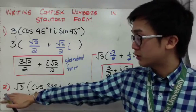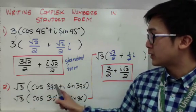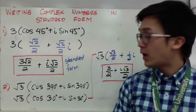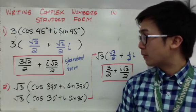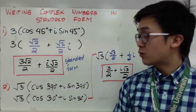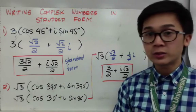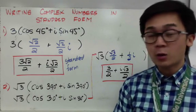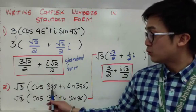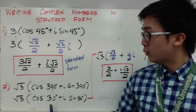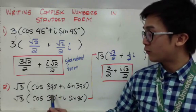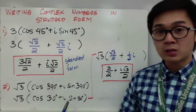The same applies to example 2. If we have √3(cosine 390° + i·sine 390°), we can simplify this into standard form. Since 390° is not in the 0 to 360 degree range, we subtract 360 from 390, which gives us 30°. That angle is now in the unit circle, so we can further simplify.